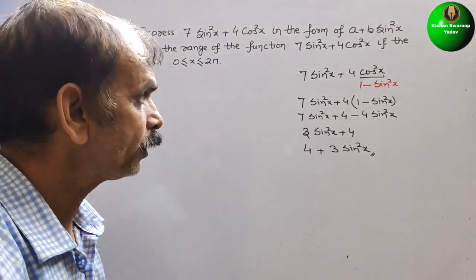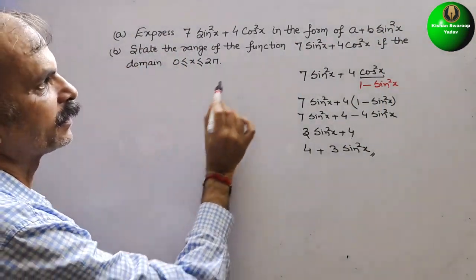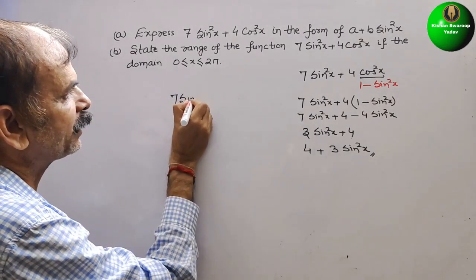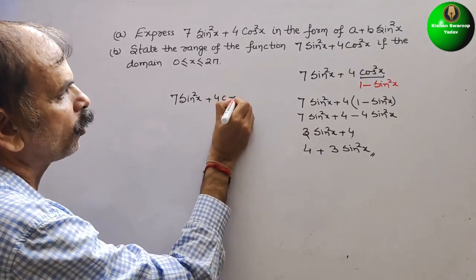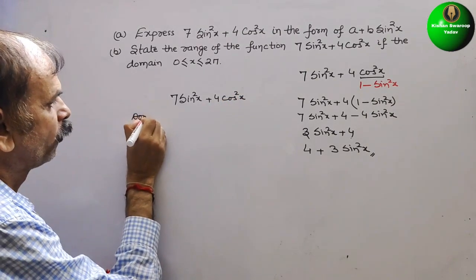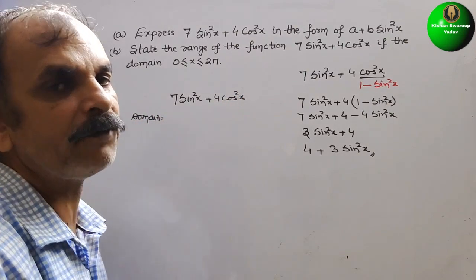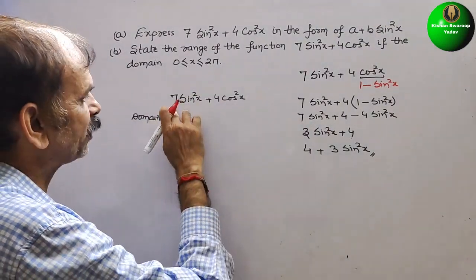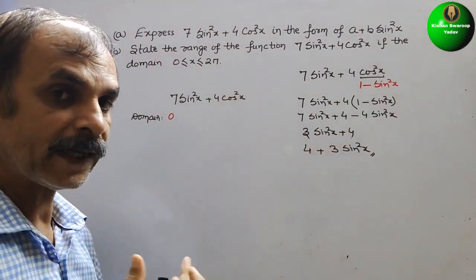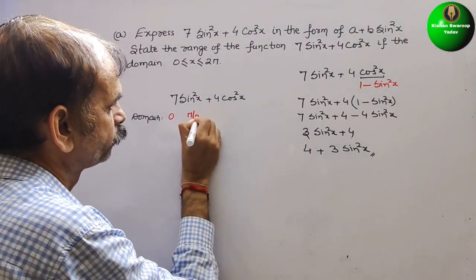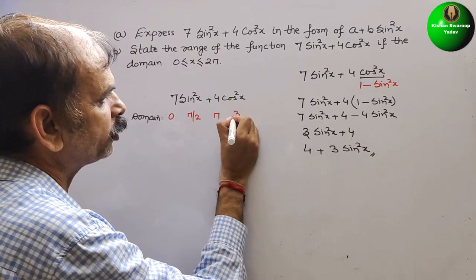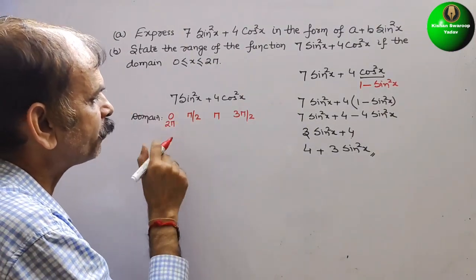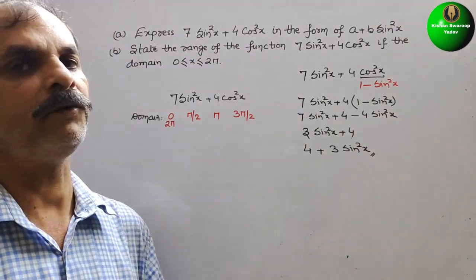For part two, the domain is 0 ≤ x ≤ 2π and the function is 7sin²x + 4cos²x. To find the range, we substitute key angles from the domain: x = 0, π/2, π, 3π/2, and 2π — noting that 2π gives the same result as 0.